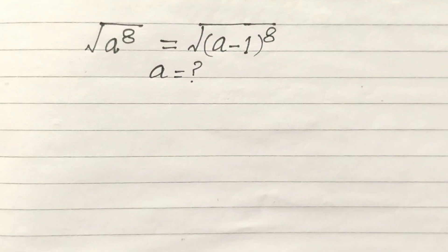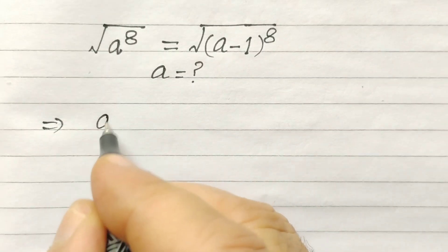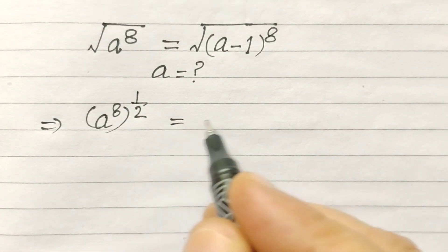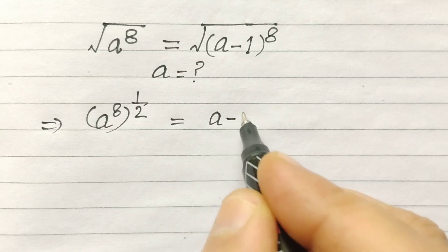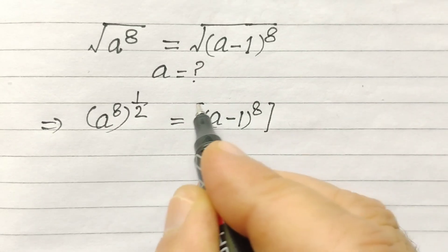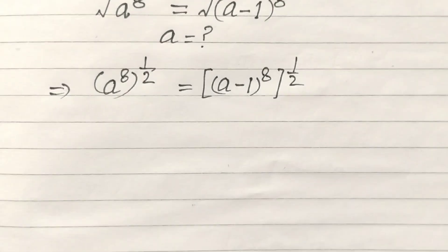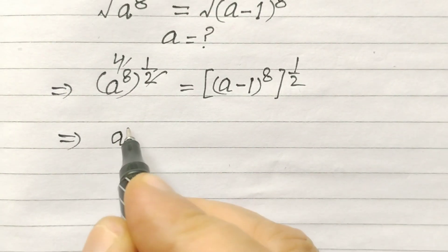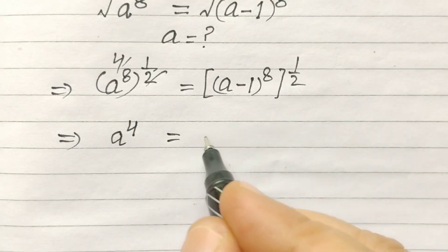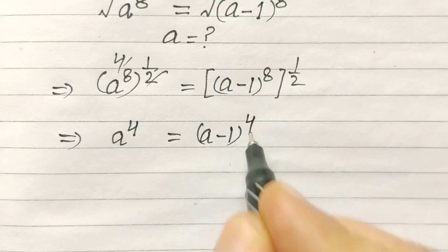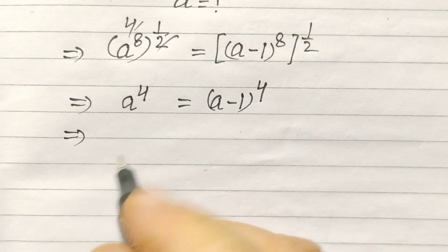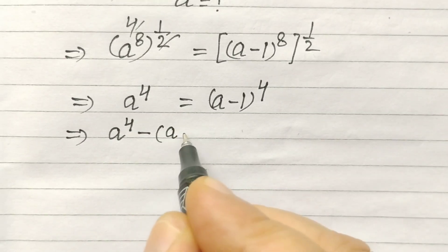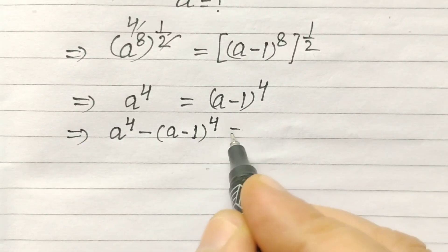Let's start. We rewrite the left side as A to the power 8 to the power 1/2, and the right side as A minus 1 to the power 8 to the power 1/2. This simplifies to A to the power 4 equals A minus 1 to the power 4. If we rearrange the equation, A to the power 4 minus A minus 1 to the power 4 is equal to 0.